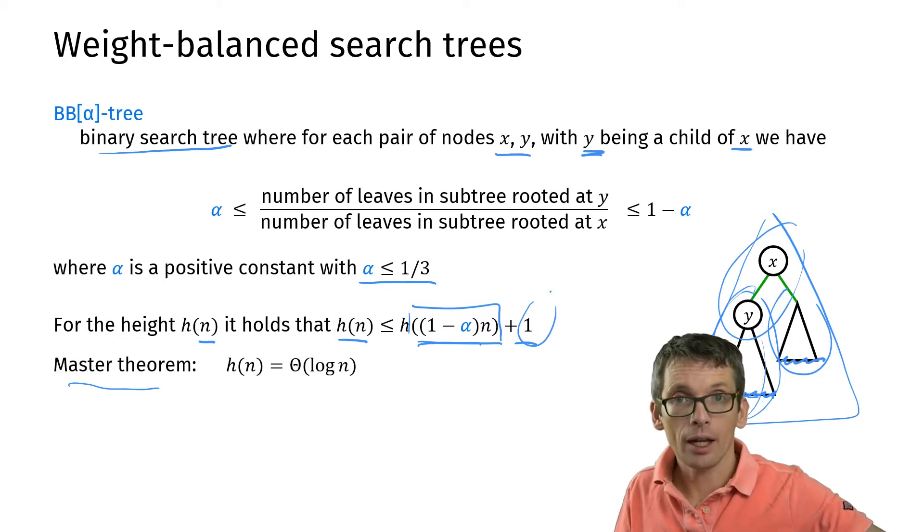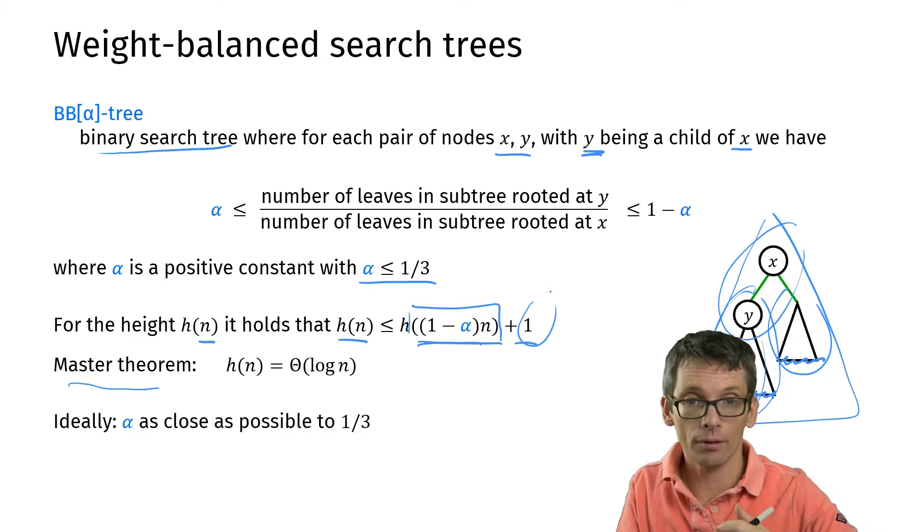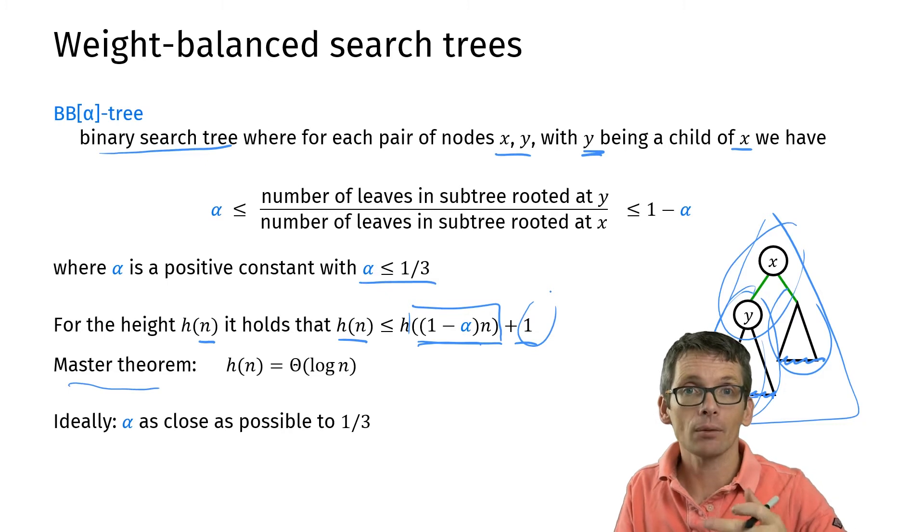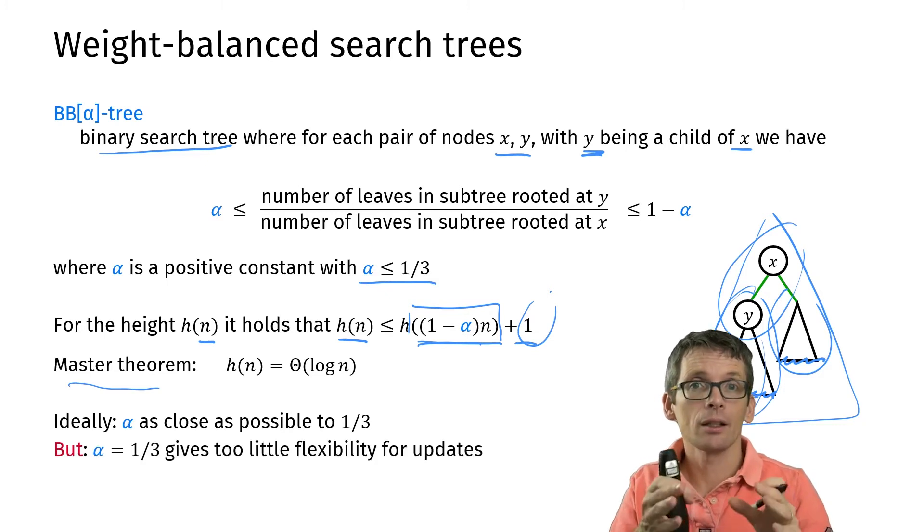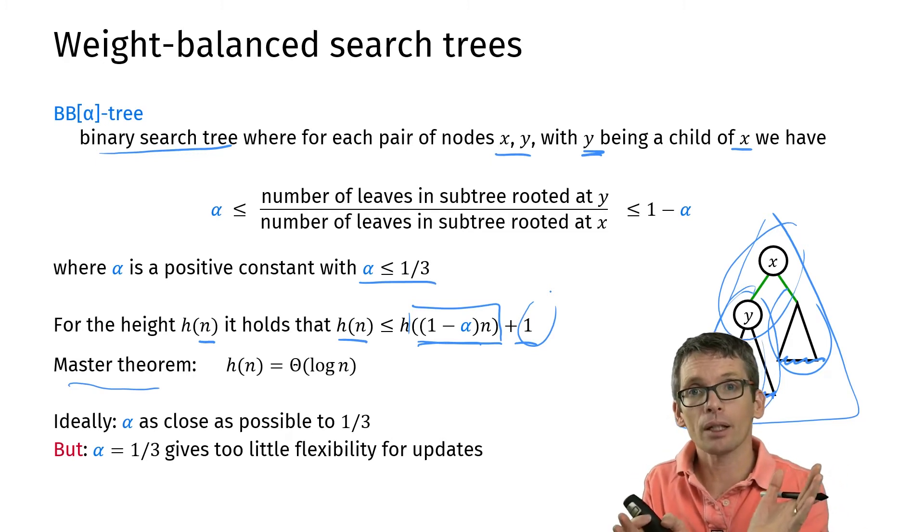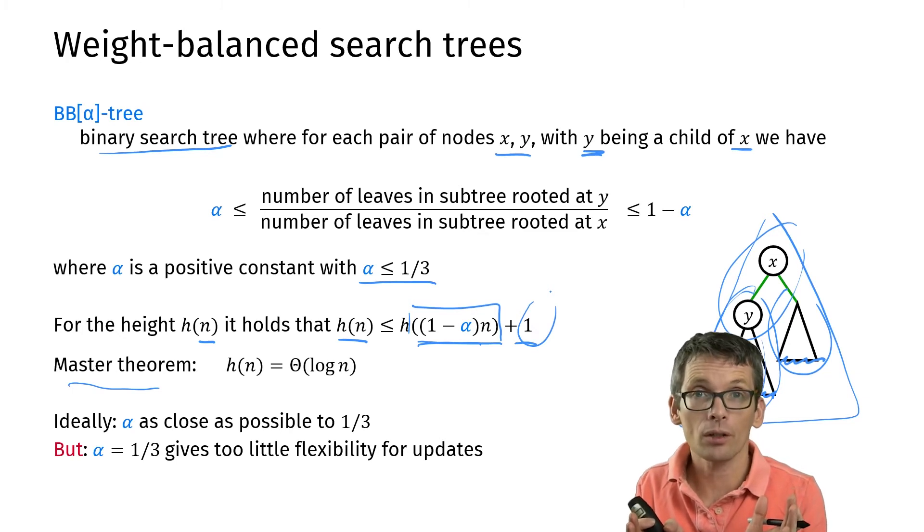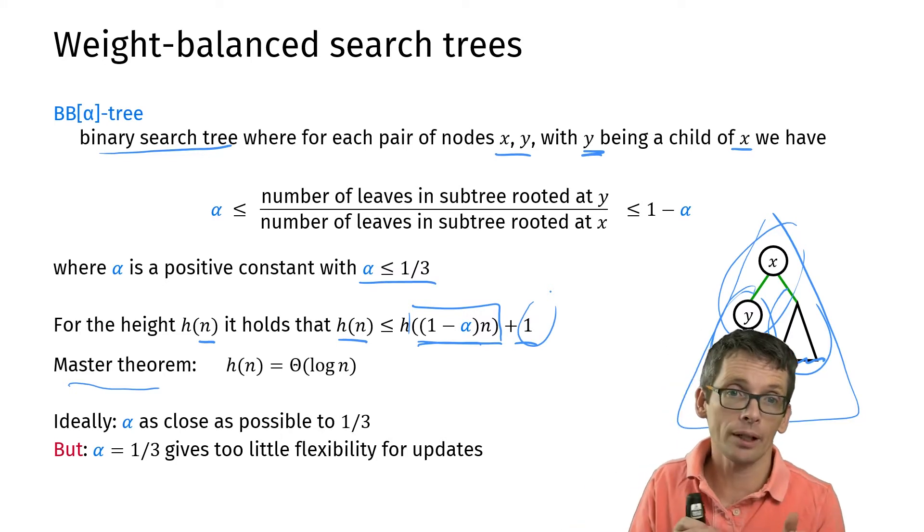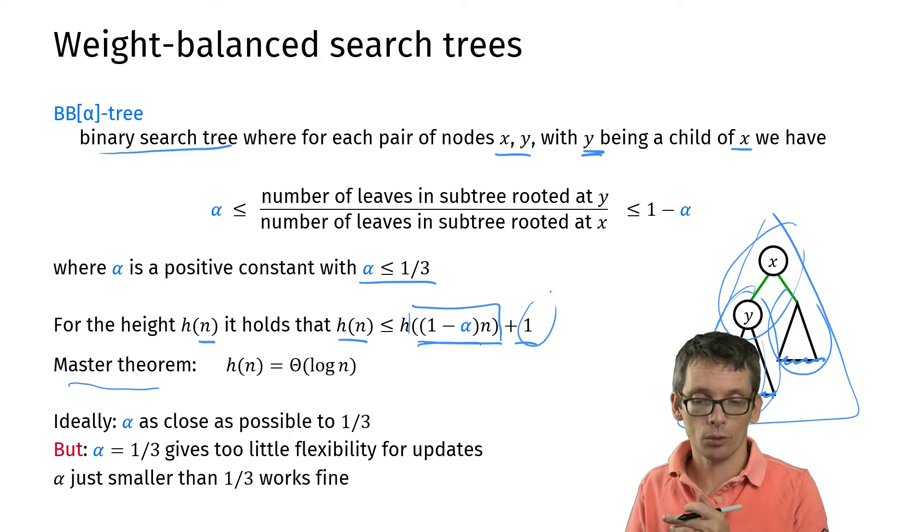To make this height as small as possible it's good to pick an α close to 1/3, but then again we will want to not pick 1/3 itself because in that case simply by how this works, I don't have given me enough flexibility in terms of balancing the operations, so the insertion and deletion will get too expensive. So close to 1/3 but not quite 1/3 itself works well for BB(α) trees.